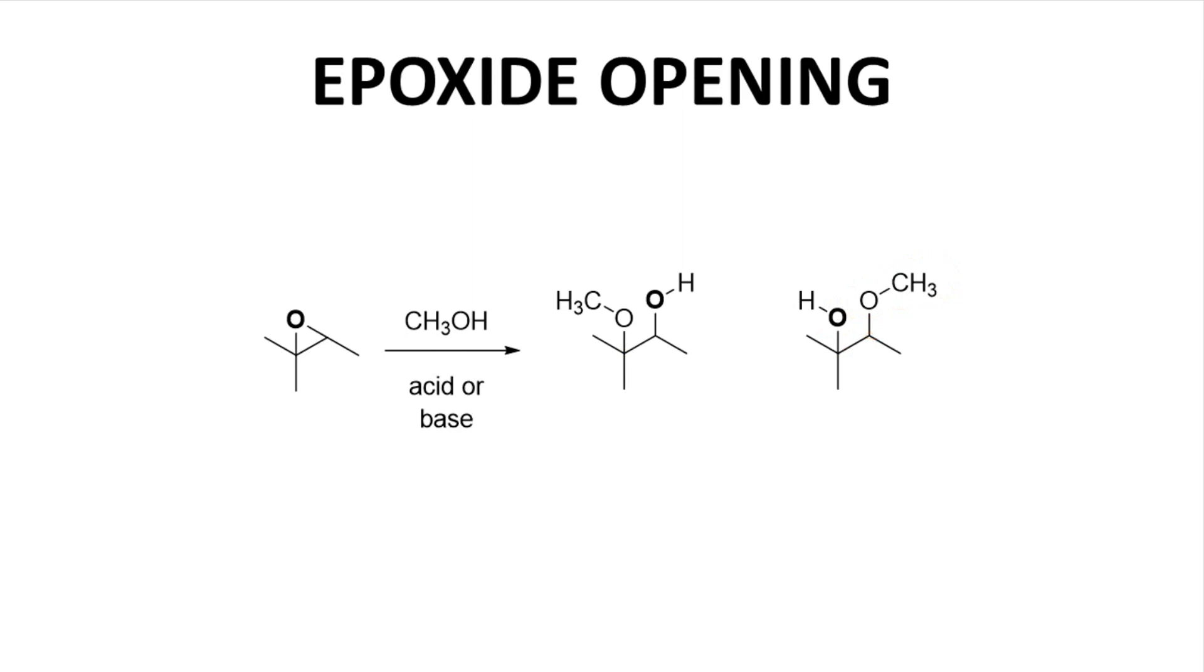The acidic, weak nucleophile conditions favor the left regioisomer. The acidic conditions go through a protonated epoxide, and the cationic intermediate tends to be attacked at the more substituted side of the epoxide.